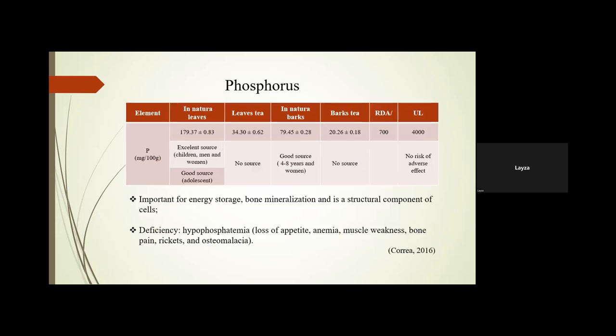For phosphorus: it is not a source in the leaves, but in the barks it is a good to excellent source for specific age groups — for example, a good source for children and women. It does not cause a risk of adverse effects. Phosphorus is important for energy storage, bone mineralization, and as a structural component of cells. A lack of phosphorus can cause hypophosphatemia, which includes loss of appetite, anemia, muscle weakness, bone pain, and osteomalacia.